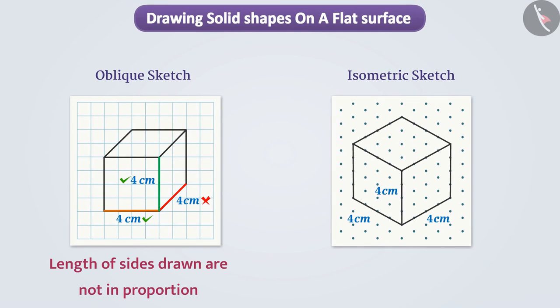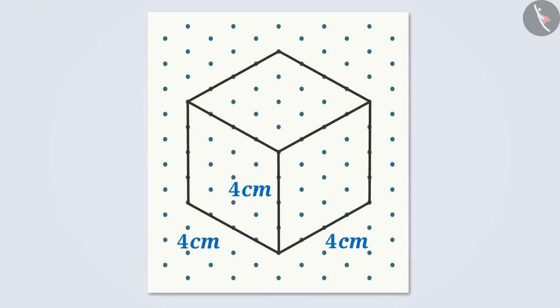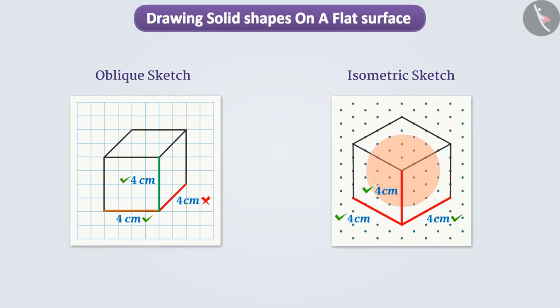In the picture drawn using the isometric sketch, we see that the length of sides are kept in same proportion. For example, here the lengths of three edges are proportional. A proportionate drawing is drawn on isometric dot sheet. Now let's learn how to draw them.